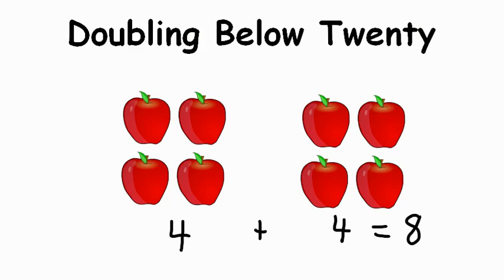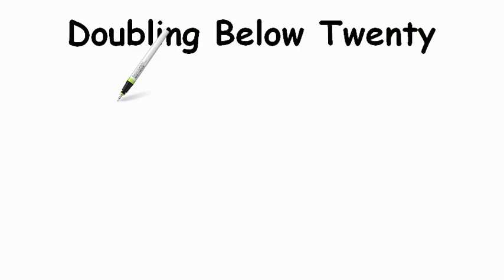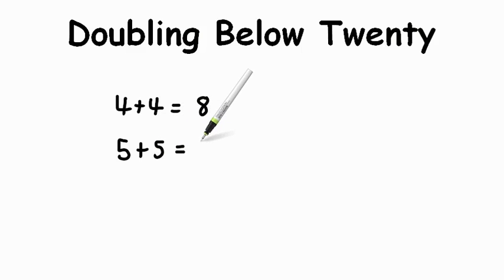Let's review some of the doubles facts. Let's begin at 4 since that's where we were. So 4 plus 4, that's our double, equals 8. And 5 plus 5 equals 10. I want you to watch for the pattern here. The next one we'd have would be 6, 6 plus 6 equals 12.